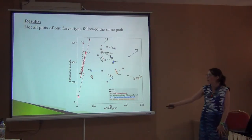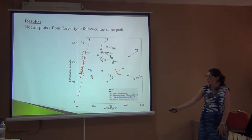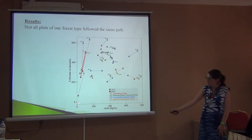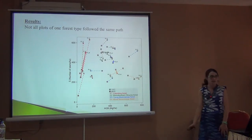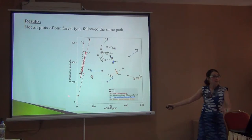The idea is that one plot over time moved in some direction. This axis is the biomass, so this plot increased in biomass over time, a little bit — from maybe 20 to 30. But this axis is number of stems. This is a colonizing forest just near the savannah.